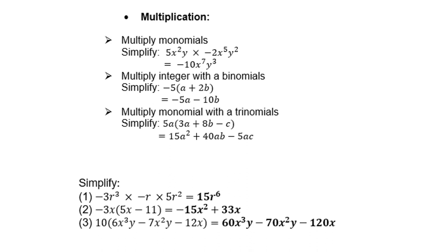Multiplication: multiply monomials like 5x squared y times negative 2x over 5y squared. Remember, although they are unlike terms, we are allowed to multiply them. So it is positive 5 times negative 2 equals negative 10, then x squared times x to the power 5 is x to the power 7.